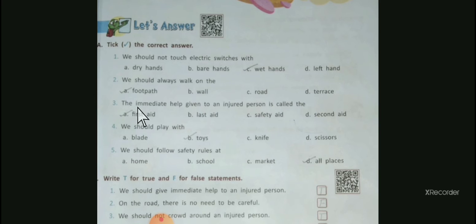Number three: The immediate help given to an injured person is called first aid, last aid, safety aid, or second aid. The correct answer is first aid. Number four: We should play with blade, toys, knife, or scissors. The correct answer is toys.